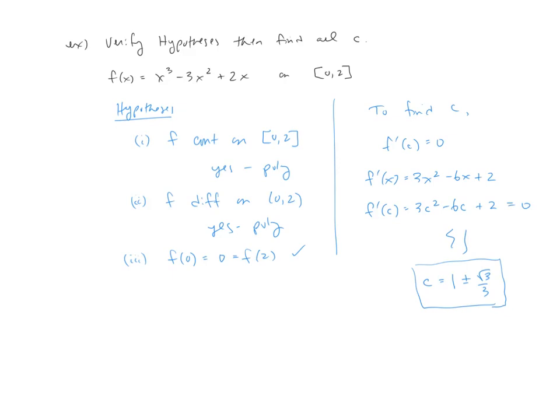Now I do want to point out real quickly, much like the last section, we want to make sure that because we're given a very specific interval to start, that our c values that we find are within the interval. And in this case, they both are. So both of these are acceptable solutions for the values of c.